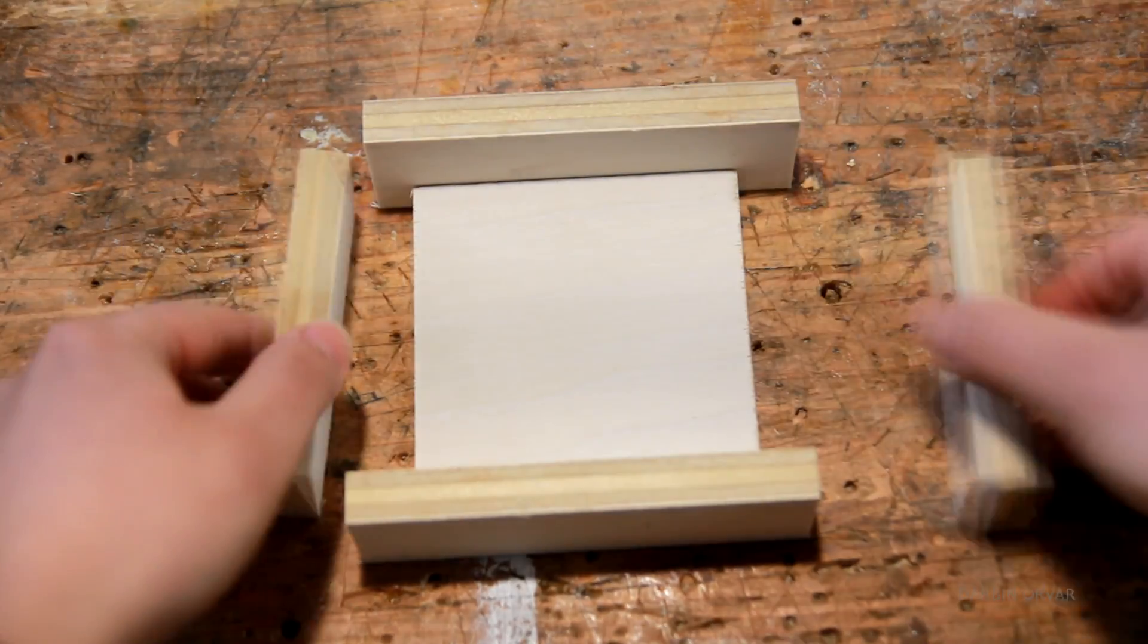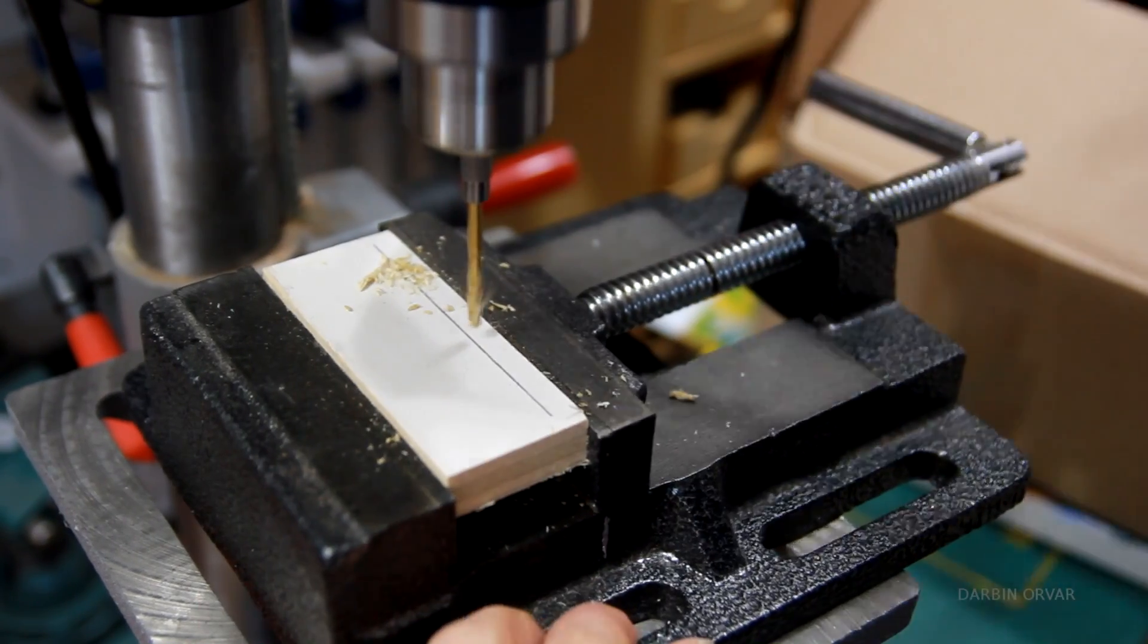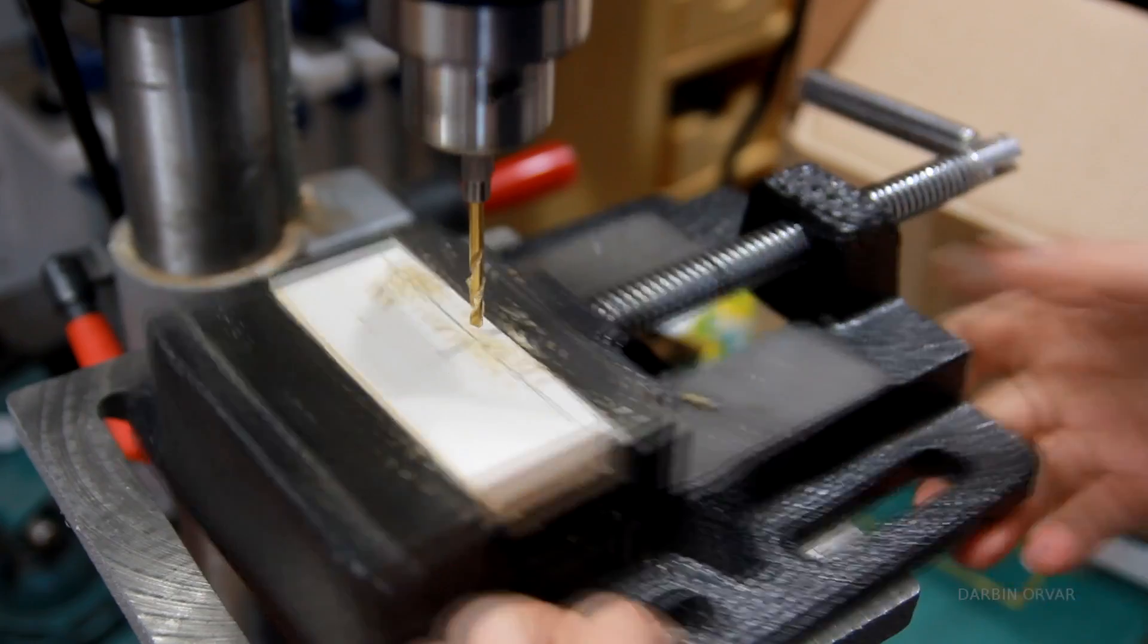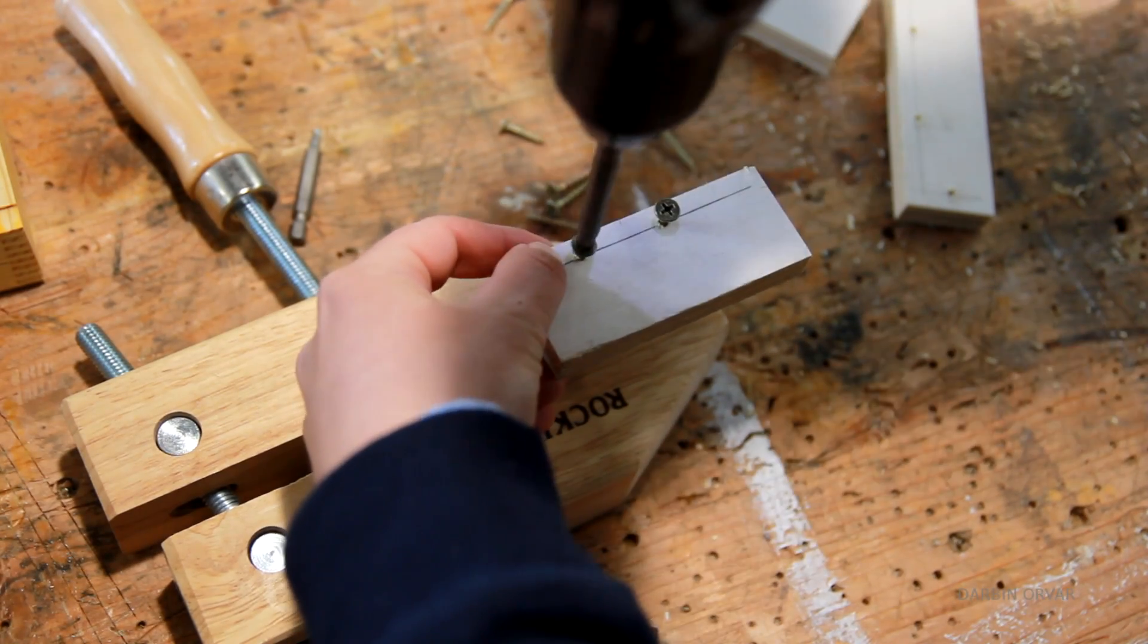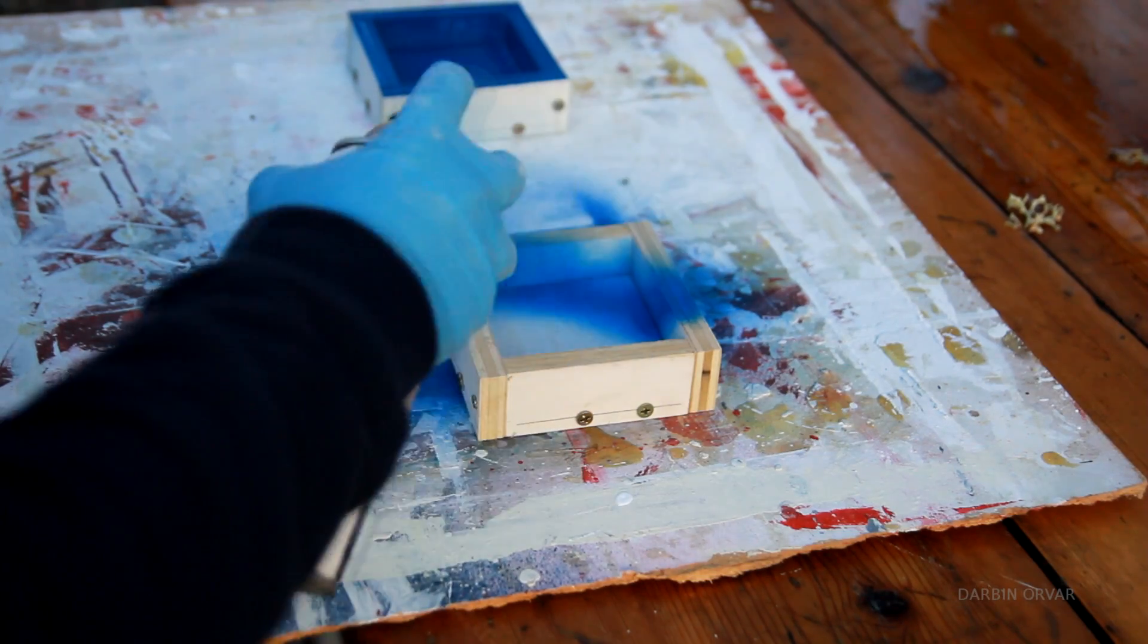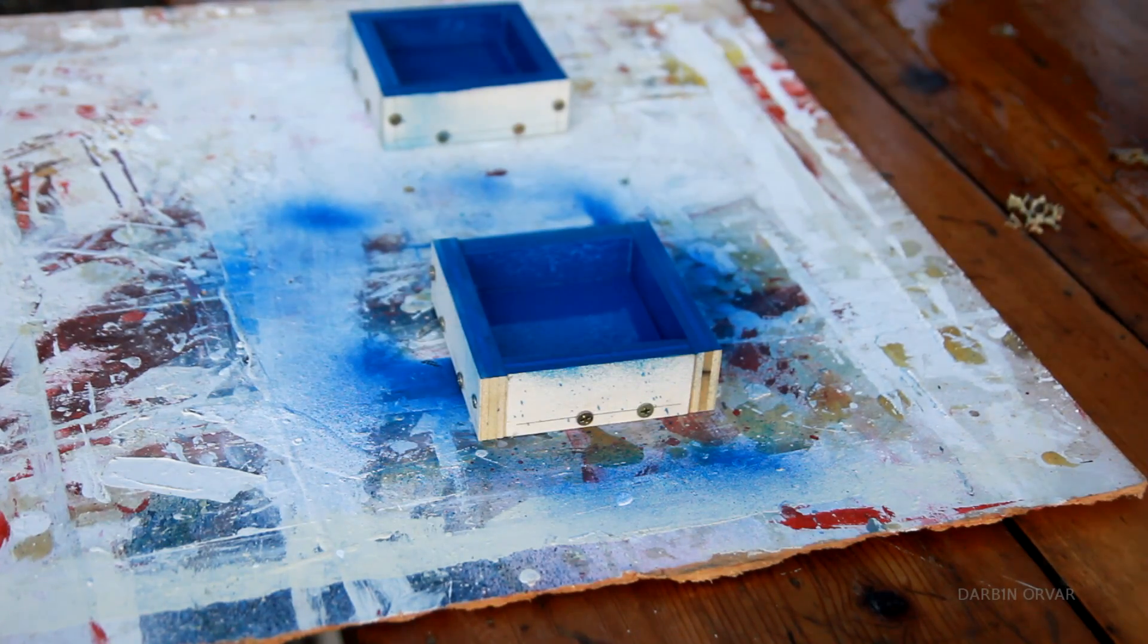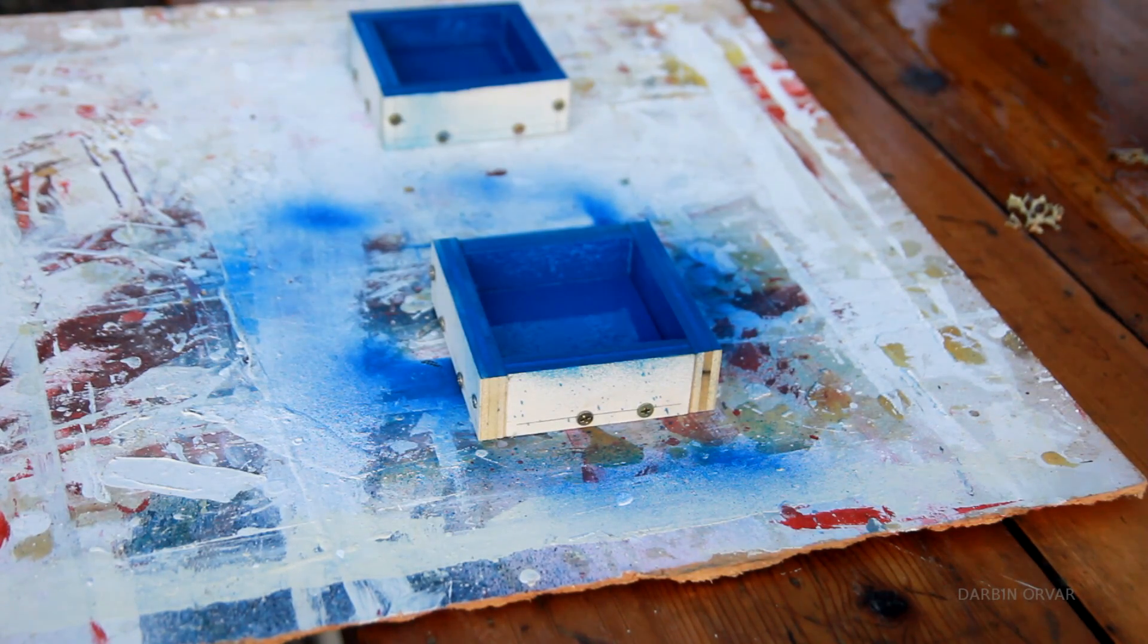Now let's move on to the concrete molds. I'm just using some scrap plywood here. So I've got some pieces cut up, which I'm just drilling and screwing together. To protect the plywood from the moisture and make it a little easier to separate the concrete from the wood, I spray painted the molds with some glossy paint.